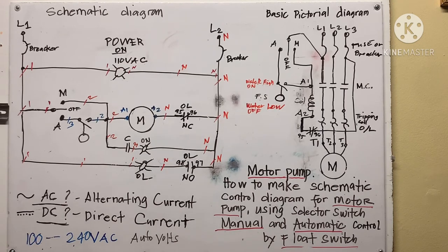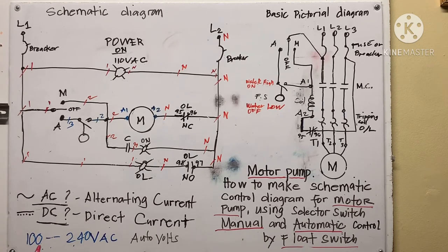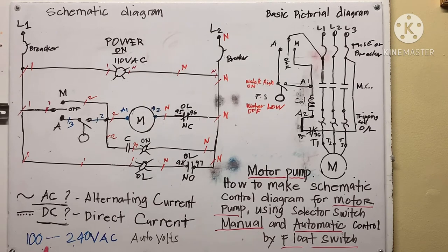Someone asked me about appliances marked 100 to 240 volts. A friend called me because they weren't sure and didn't want to blow or damage their appliances. I explained: if you see '100 to 240 volts' written on it, that means it's auto-voltage.